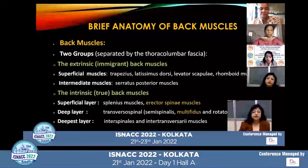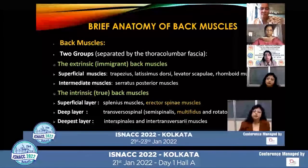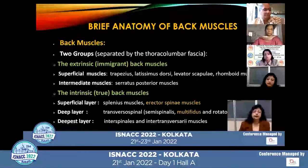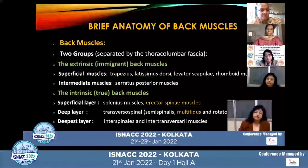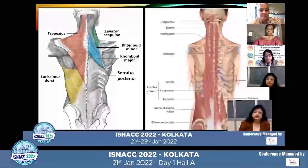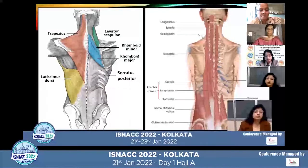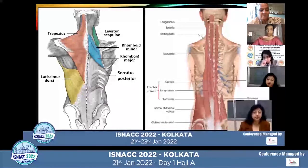The back muscles are broadly divided into two groups: the extrinsic group of muscles and the intrinsic group of muscles. These both groups are separated by the thoracolumbar fascia. The extrinsic group of muscles consists of the trapezius muscle, levator scapulae muscle, rhomboid minor and major muscles, serratus posterior muscles, and the latissimus dorsi muscle.